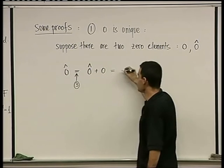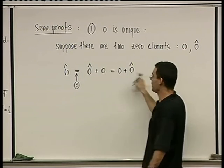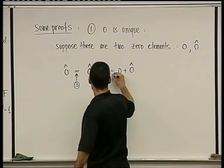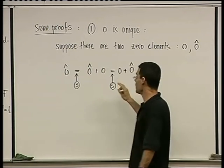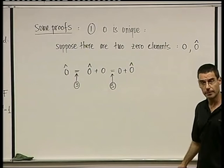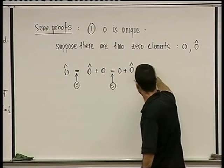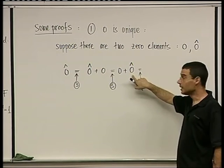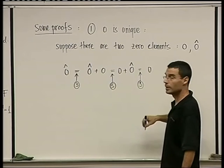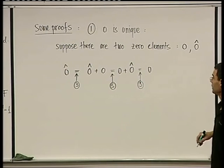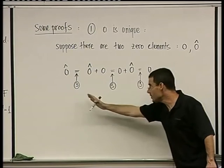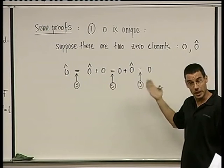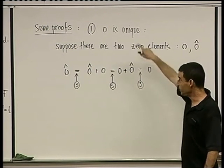On the other hand, this equals zero plus zero-hat, because of property five — addition is commutative in a field. And now using axiom three again, but for zero-hat: a plus zero-hat equals a, because zero-hat is a zero element. So just using the axioms, I ended up showing that zero-hat and zero are equal — they were the same thing to start with. Zero is unique.